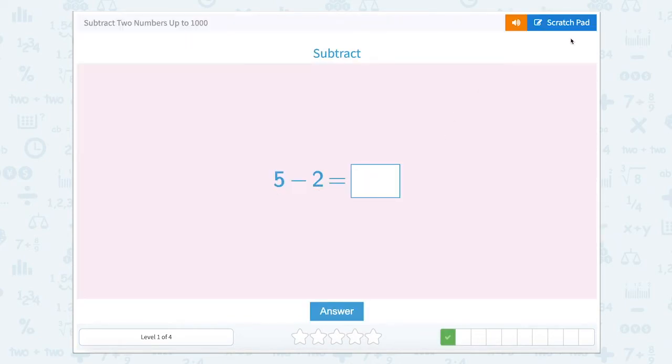Five minus two. Well let's draw one, two, three, four, five, and let's take away one, two. That leaves us with one, two, three.